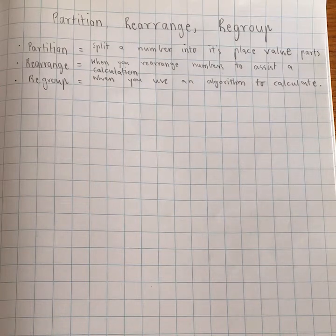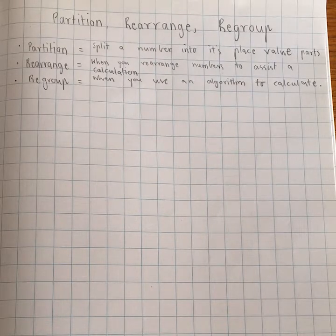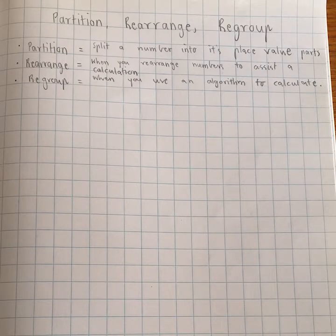Hi everyone, in today's video we're going to have a look at two actions that we can make with numbers and they are petitioning or petition, rearrange and regroup. And these three actions are really important for making calculations and using our knowledge of place value. So you have to use your knowledge of place value when doing these three things.